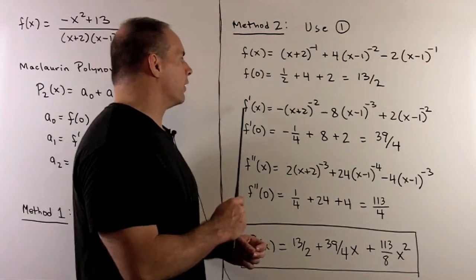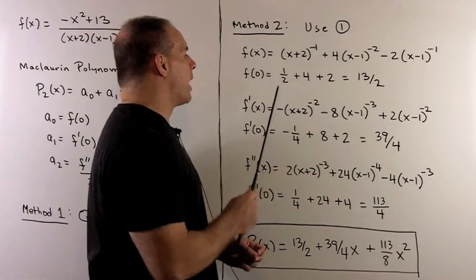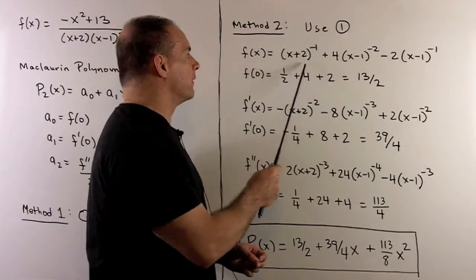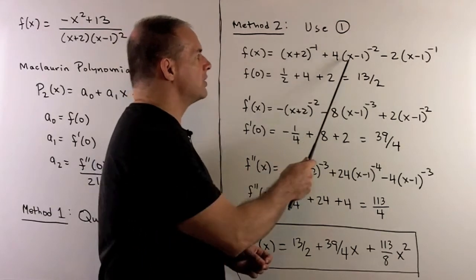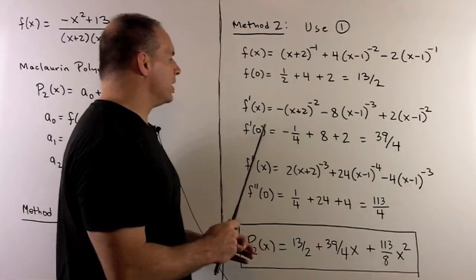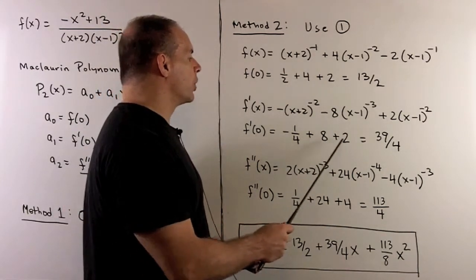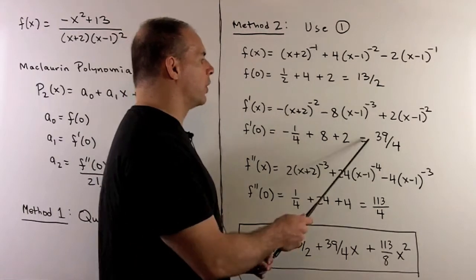If I take the first derivative, we're just going to apply the chain rule to each of these terms. We bring it down to -1, take 1 off, derivative of the inside is 1, and so on for our other terms. If we evaluate at 0, we get -1/4 + 8 + 2. So it's 40/4 - 1/4 gives me 39/4.